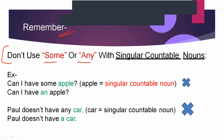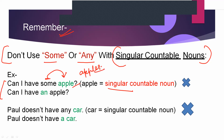Important: never use 'some' or 'any' with singular countable nouns. For example, 'Can I have some apple?' is wrong because 'apple' is a singular countable noun. If you had 'apples' (plural), then 'Can I have some apples?' is correct. For a singular noun, you must use an article: 'Can I have an apple?' — use the article 'an,' not the determiner 'some.'